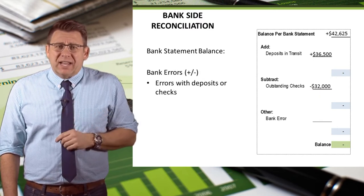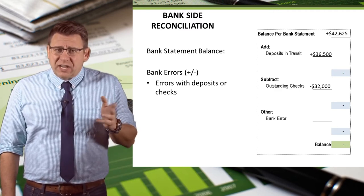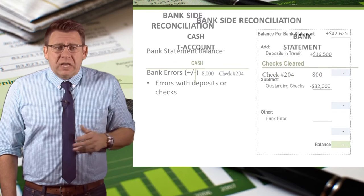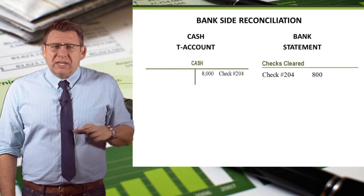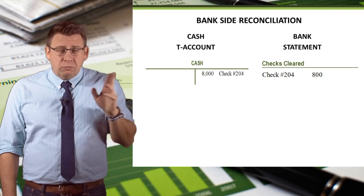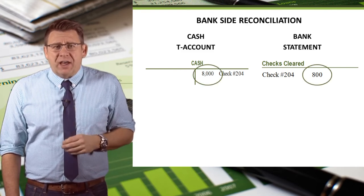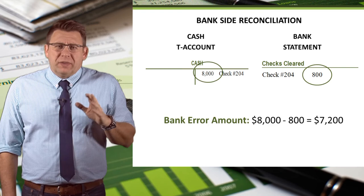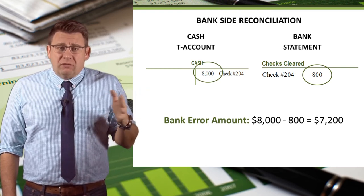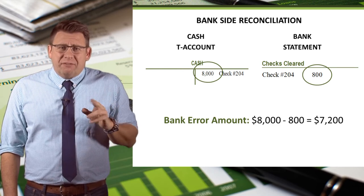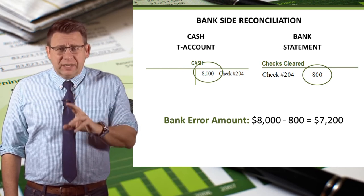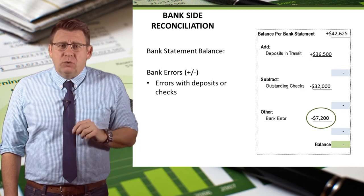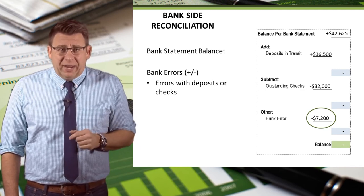The final item that reconciles the bank statement balance are bank errors. Bank errors can either add or subtract from the bank statement balance depending on the nature of the error. Let's assume that the book amount is correct, so this is a bank error. The bank should have deducted $8,000 from our account but instead only deducted $800. To determine the amount of error, we take the difference between the two — $7,200. If the bank deducted too little, we need to deduct the rest, so on the bank side we would deduct $7,200 as a bank error and then call the bank to inform them about this mistake.